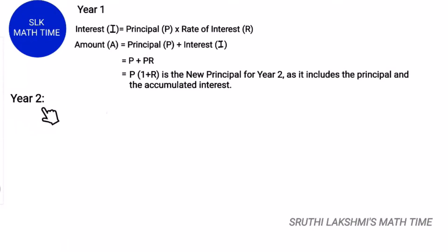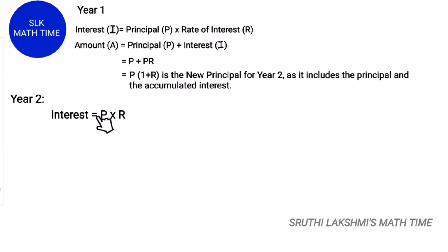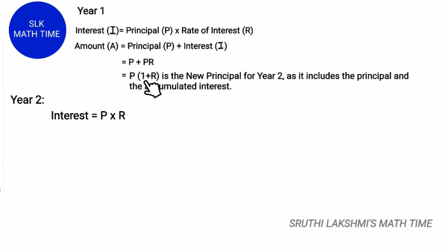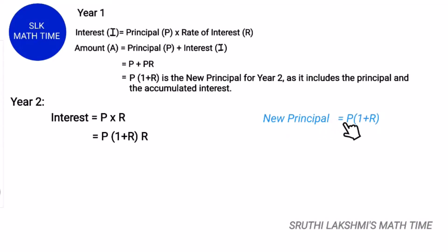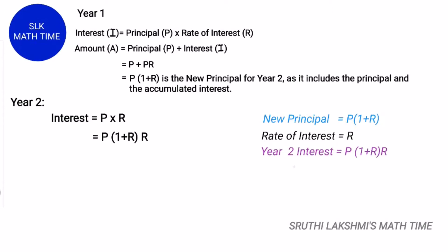Now let's see for the second year. The interest formula is P into rate of interest. Here P is nothing but the total amount at the end of year 1, which is P into 1 plus R — the new principal for the second year, because it includes the principal and the accumulated interest. So the interest is P into 1 plus R into R.